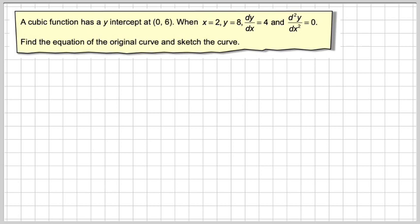A cubic has a form of y equals ax³ plus bx² plus cx plus d, and we've got to find the values of a, b, c, and d from this information given in the question.